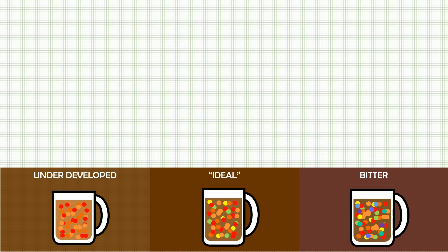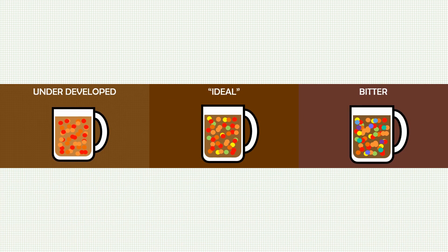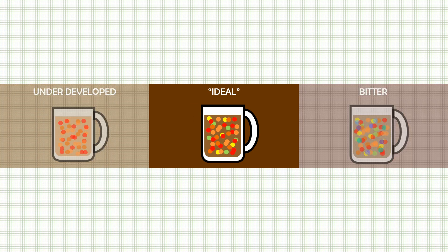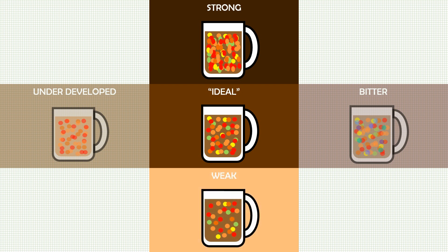Now that we've explained solubles yield, we'll move on to solubles concentration, focusing on the cup we identified as ideal. While solubles yield covered the types of materials that were extracted, solubles concentration covers the quantity of materials that were extracted. For example, if we had our ideal mix of molecules but in a much higher concentration, we would have a strong cup of coffee. Conversely, this same yield of molecules in a lower concentration would be a weak cup of coffee — not a bad flavor, but low concentration and relatively watery tasting.